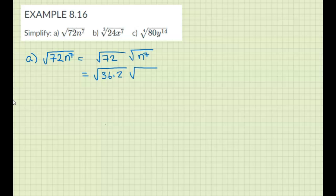And this one, the index is 2 here. 7 does not divide by 2, so I'm going to write it as n to the 6 times n to the 1.